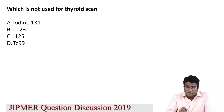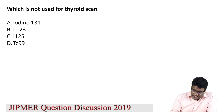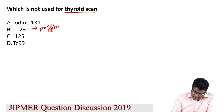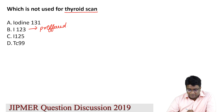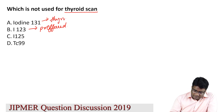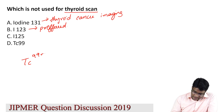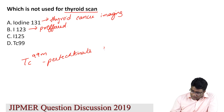Look at the next question: which is not used for thyroid scan — iodine 131, iodine 123, iodine 125, or technetium 99m? For thyroid scan, the preferred isotope is iodine 123 for functional scans of the thyroid gland. Iodine 131 can also be used for thyroid scans, especially for thyroid cancer imaging. Even technetium 99m pertechnetate scan can be done to look at the thyroid gland.